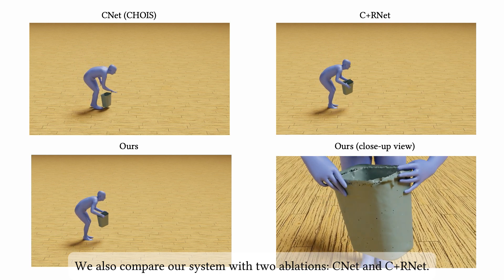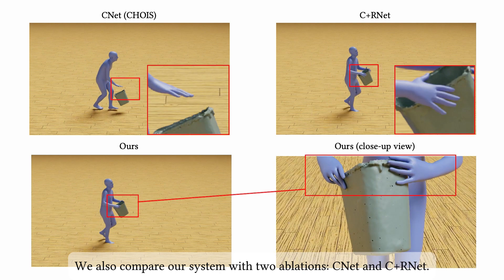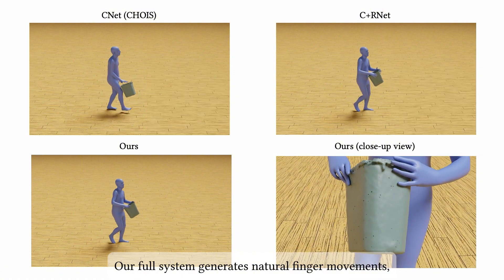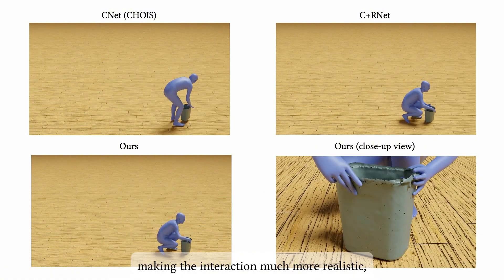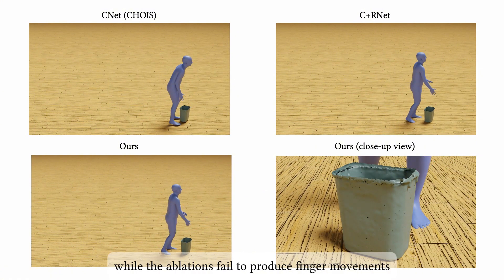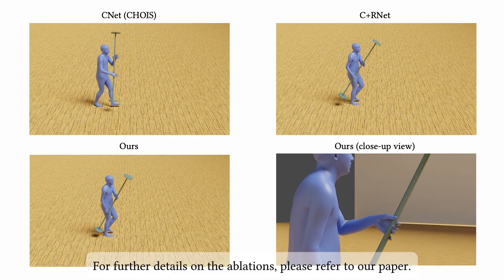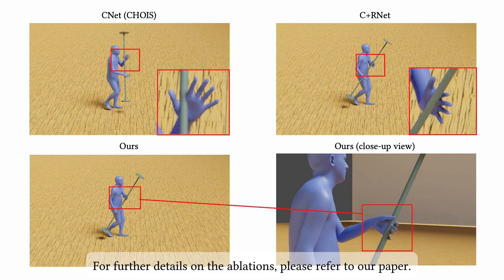We also compare our system with two ablations, CNET and C plus RNET. Our full system generates natural finger movements, making the interaction much more realistic, while the ablations fail to produce finger movements and exhibit severe artifacts. For further details on the ablations, please refer to our paper.